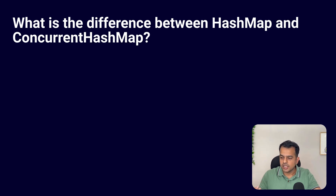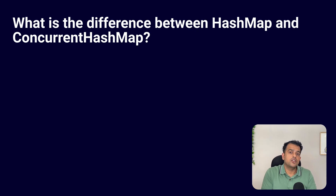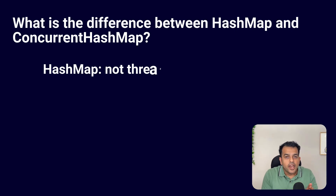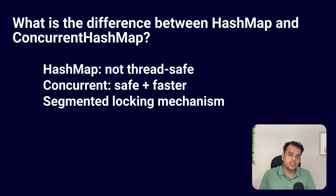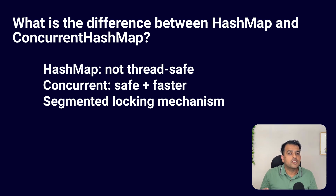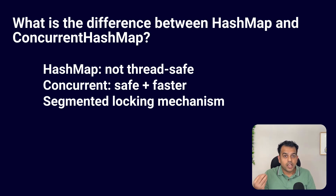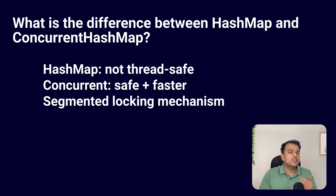The interviewer went back to Java basics: what is the difference between HashMap and ConcurrentHashMap? HashMap is not thread-safe. ConcurrentHashMap is thread-safe and is designed for concurrency. HashMap uses a single object-level lock if made synchronized. ConcurrentHashMap uses segmented locking, so multiple threads can access it efficiently. In multi-threaded systems, we always prefer ConcurrentHashMap.